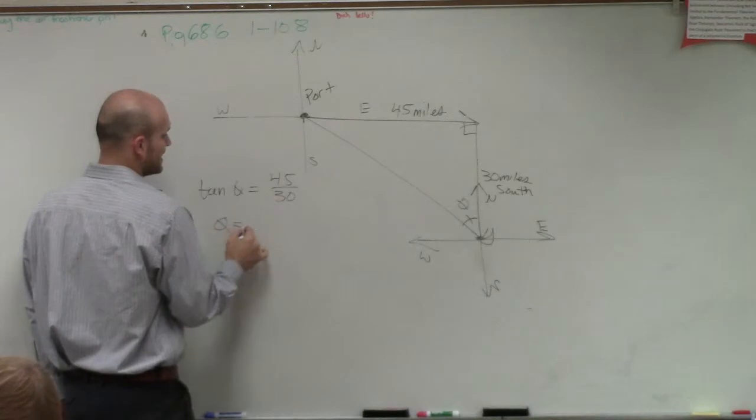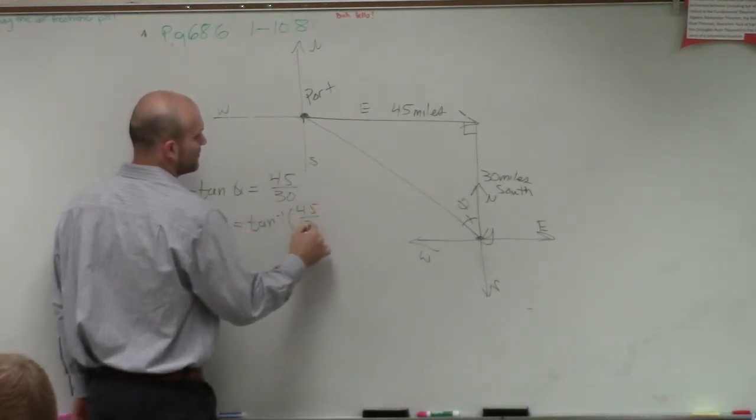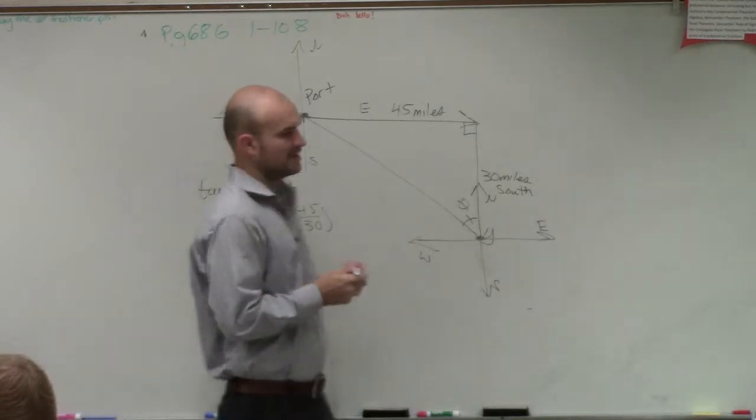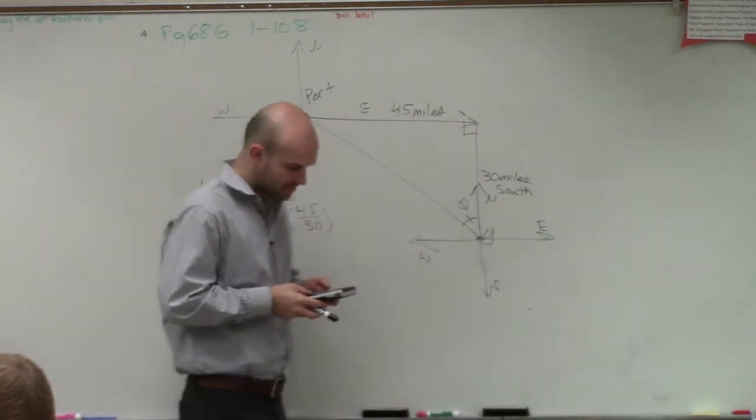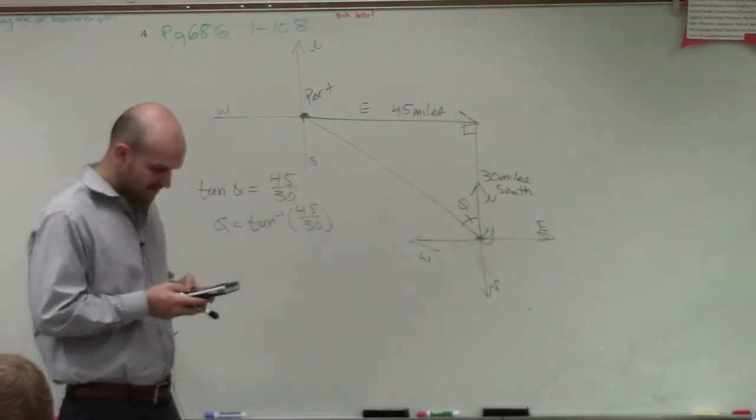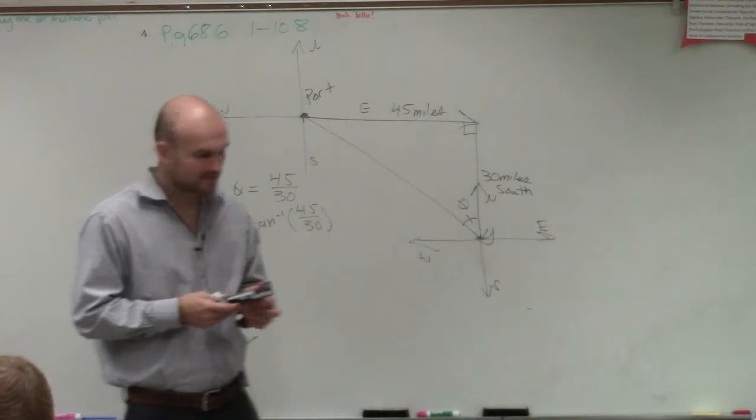So we can write out tangent of theta is equal to my opposite over my adjacent. So therefore, we can say theta equals tan inverse of 45 over 30. So then I take my nice little handy calculadora, and inverse tangent of 45 divided by 30, and that's 56.30 degrees.